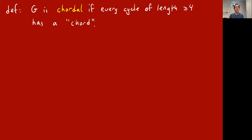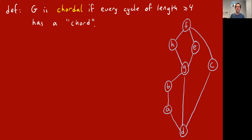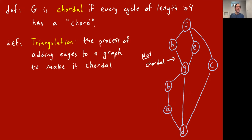A graph G is called chordal if every cycle in the graph of length at least four has a chord, where a chord is an edge connecting two non-adjacent vertices on the cycle. Our favorite graph is not a chordal graph — here is a cycle of length four with no chord. For a chord you'd need either the GA edge or the BD edge.